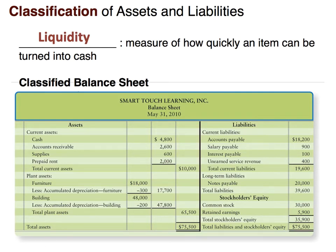If you look at this balance sheet, you can see we have certain assets classified as current and some assets classified as plant assets or long-term assets. Current assets are typically assets that are going to be liquefied within a year, and long-term or plant assets are assets that are not going to be liquefied within a year. Things like furniture, buildings, and land would be classified as long-term. For liabilities, current liabilities are liabilities you plan to pay off within a year, and long-term liabilities are those you do not plan to pay off within the year.